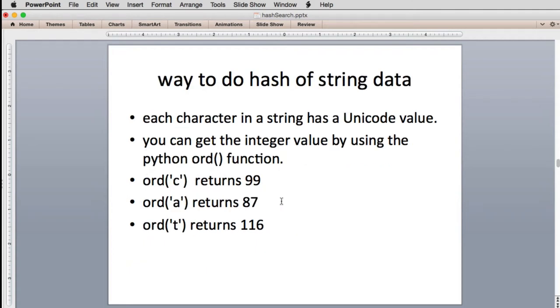So what if you have strings? Every string value has a Unicode numeric value and you can get the numeric value by using a special Python function called ord, O-R-D. Any language you use will usually have a way of converting your characters to the actual number value. For example, ord of C is 99, ord of A is 87 and so on.